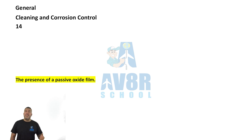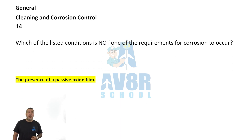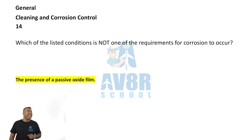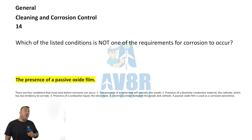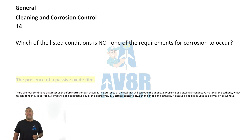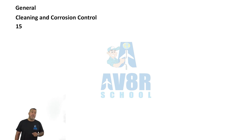Number 14: the presence of a passive oxide film. Which of the listed conditions is not one of the requirements for corrosion to occur? The answer is: the presence of a passive oxide film.